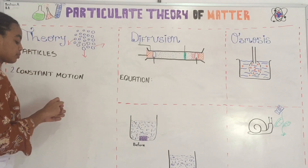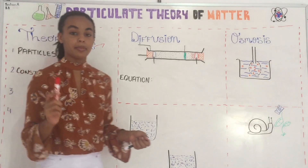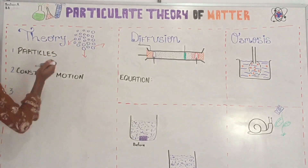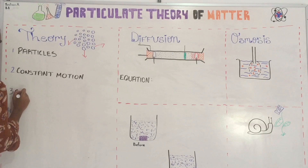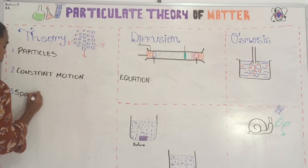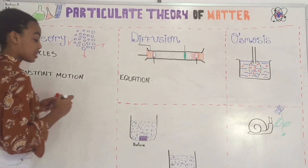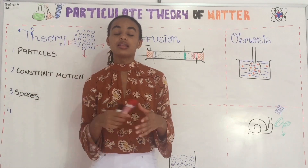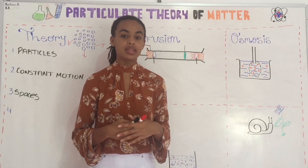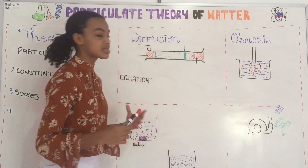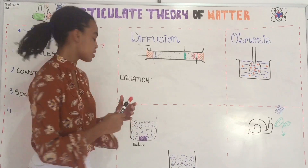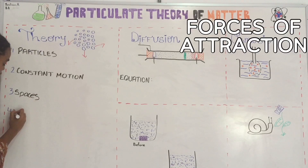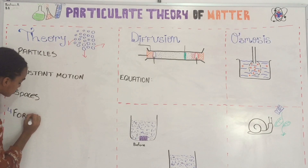Now if you notice, between these particles that make up matter there are some spaces. So we say that between the particles there are spaces between the particles that make up matter. And the last statement says that there are forces of attraction between these particles. Now in the next video you will learn that depending on the strength of the force of attraction you can have different states of matter — solid, liquid, or gas. But today we're just going to point out that there are forces of attraction between these particles.